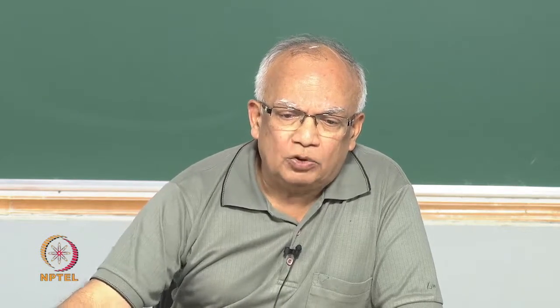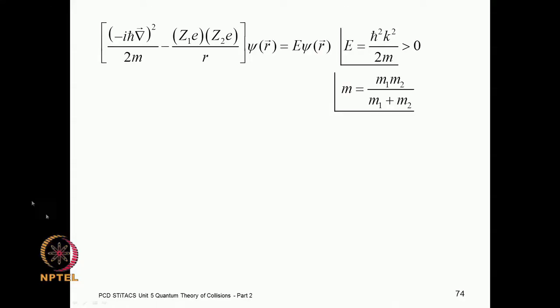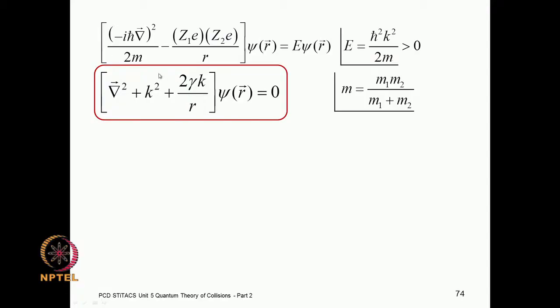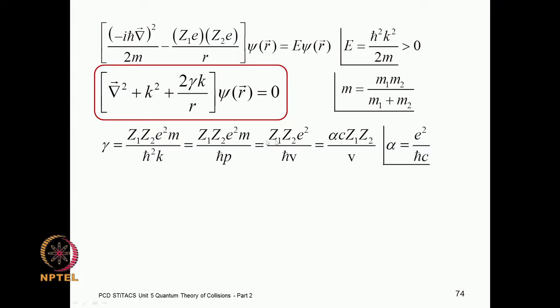Let us discuss Coulomb scattering. This is the Schrödinger equation we have to solve, with the Coulomb interaction between two charged particles z₁e and z₂e. In the case of the hydrogen atom it is just an electron and a proton. This is the Schrödinger equation we want to solve for continuum states — bound states we have done in our previous course. The energy is positive, and you can rewrite it, getting rid of m and ℏ, and it simplifies. The 1/r Coulomb interaction is captured with γ taking care of all the other constants.